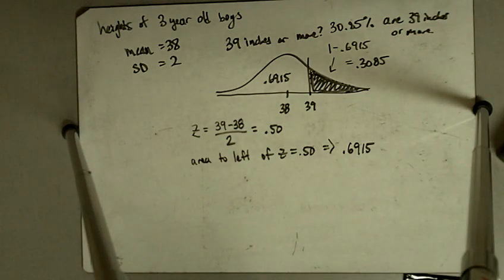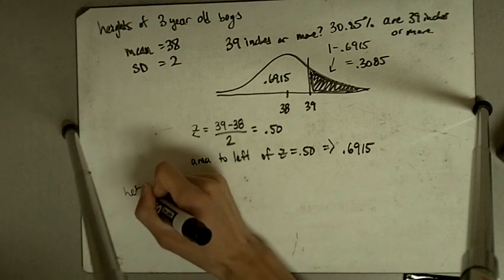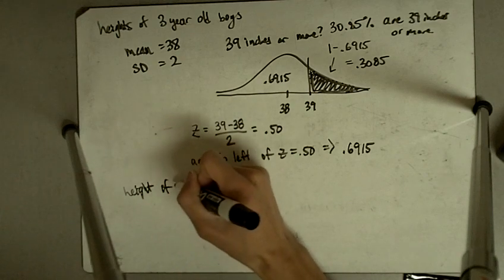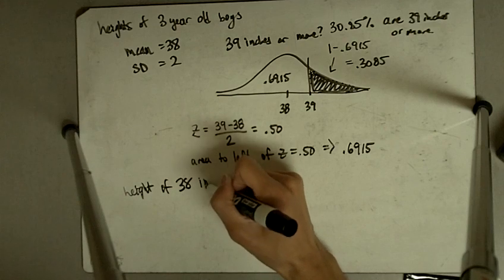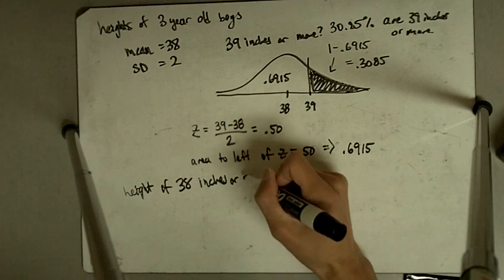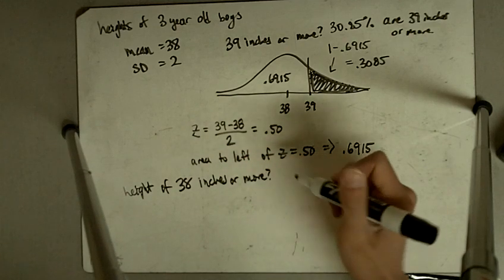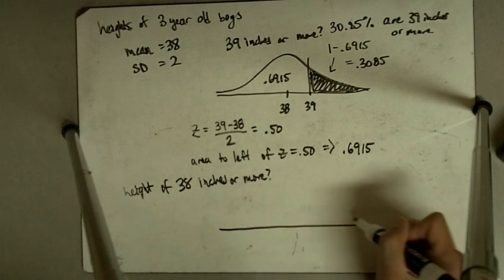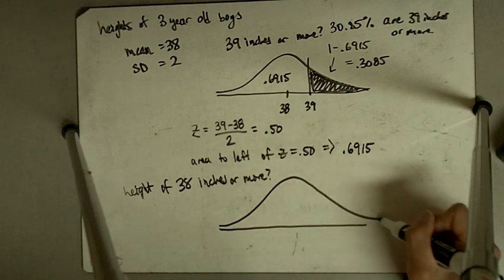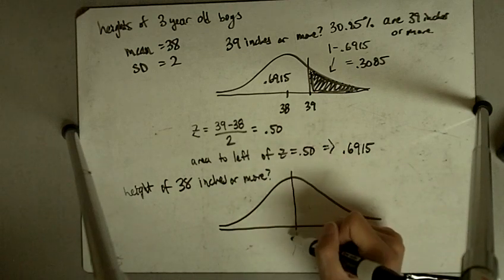So what percent is going to be 38 inches or more? And then part B says what percentage have a height of 38 inches or more? In this case, our mean is 38, so we're drawing a cutoff line right at the mean.